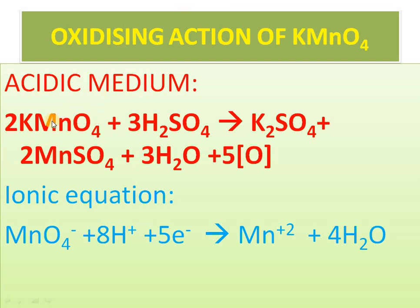KMnO4 changes to manganese sulfate. Sulfate is minus 2, so manganese would be plus 2. The oxidation number changes from +7 to +2 — that is reduction. A substance that undergoes reduction acts as an oxidizing agent. Therefore, KMnO4 acts as an oxidizing agent.